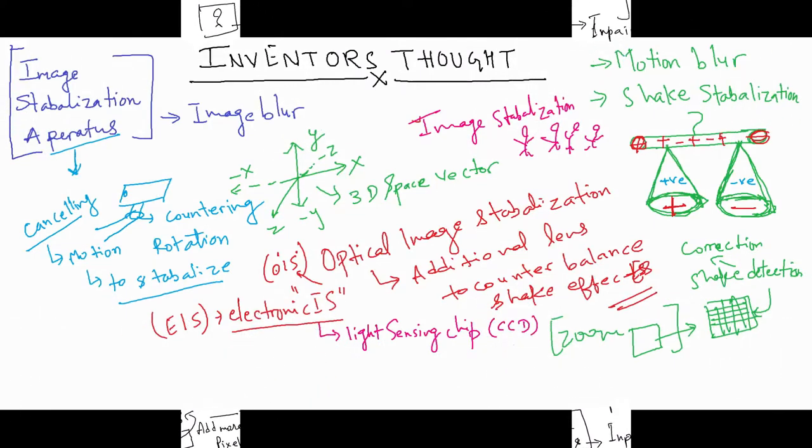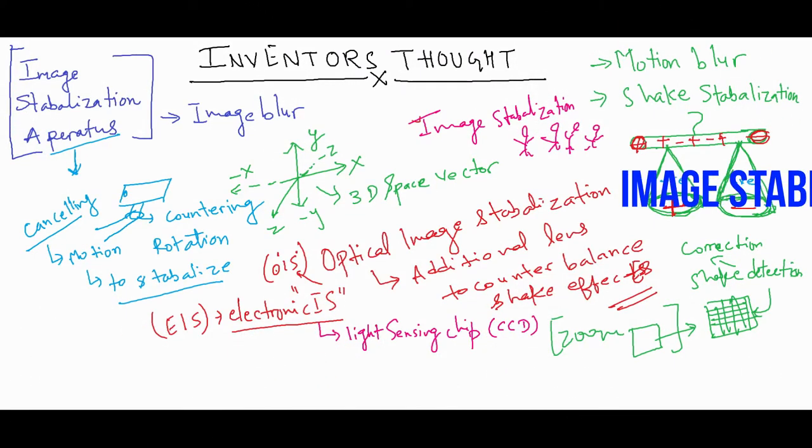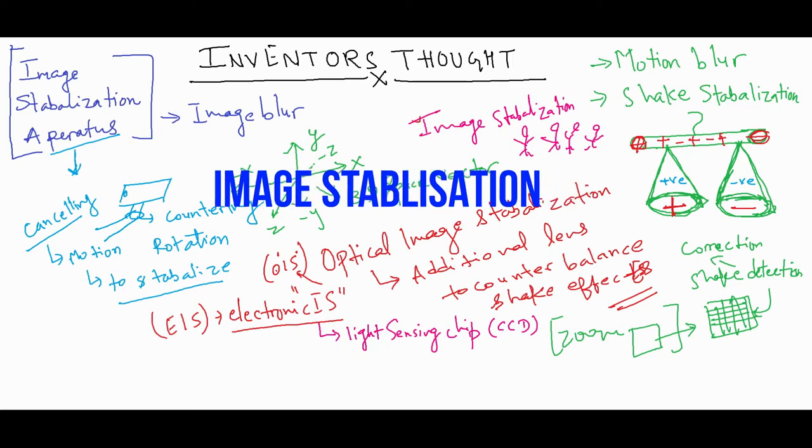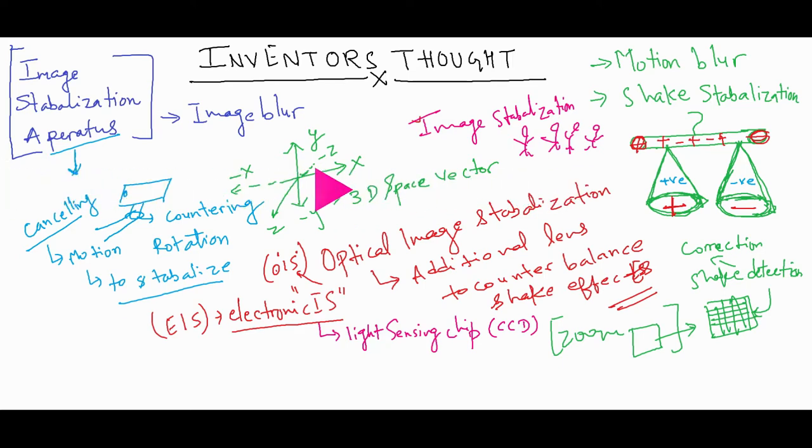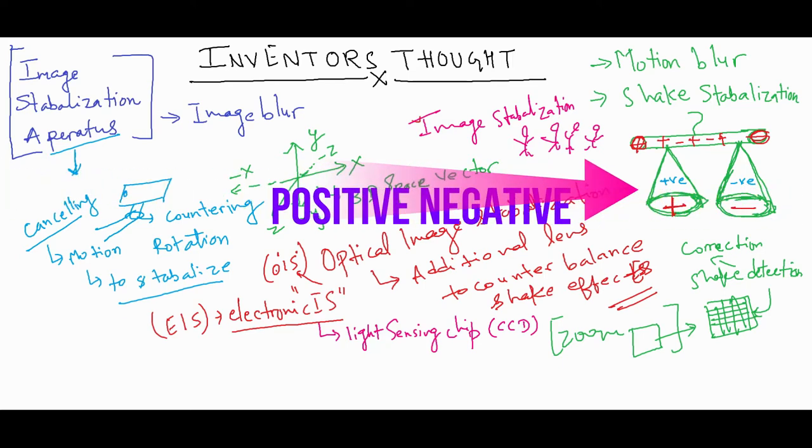Before moving ahead with the patented use case, there are terms to understand. Image stabilization is a relative method, performed between more than one apparatus as a balancing act.